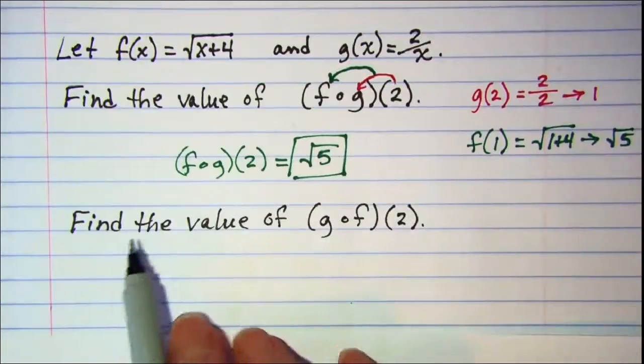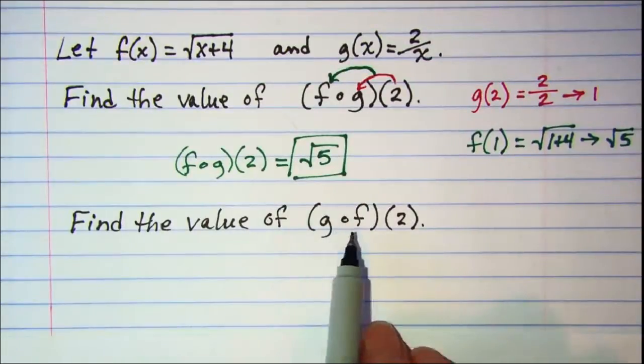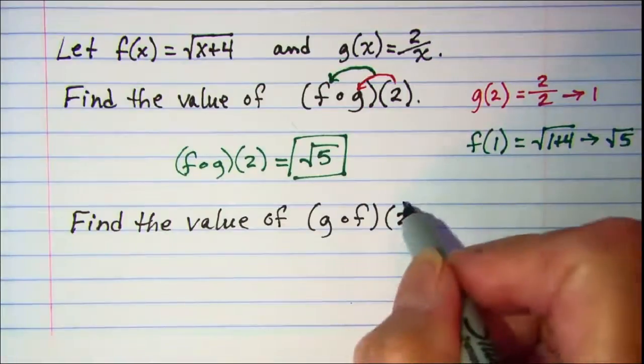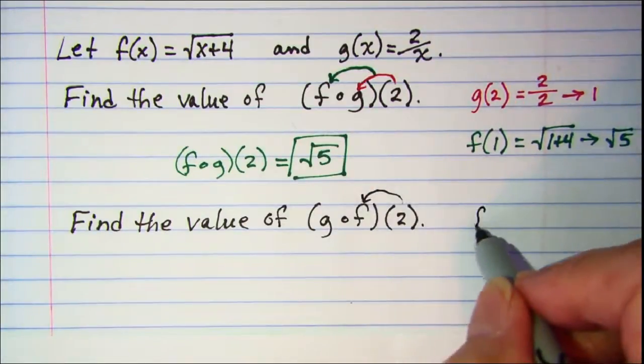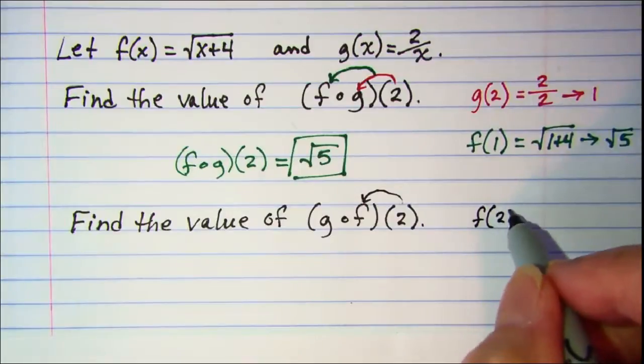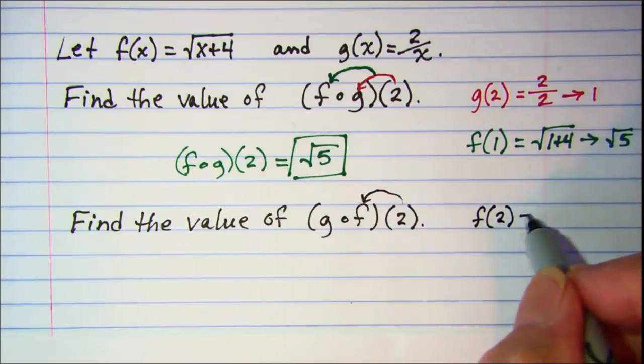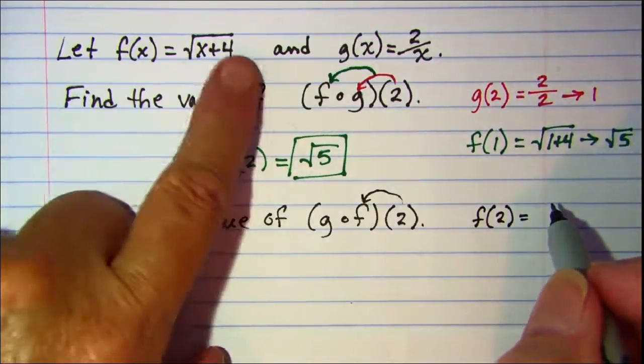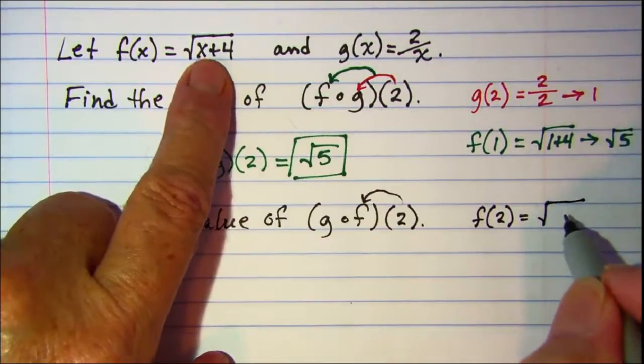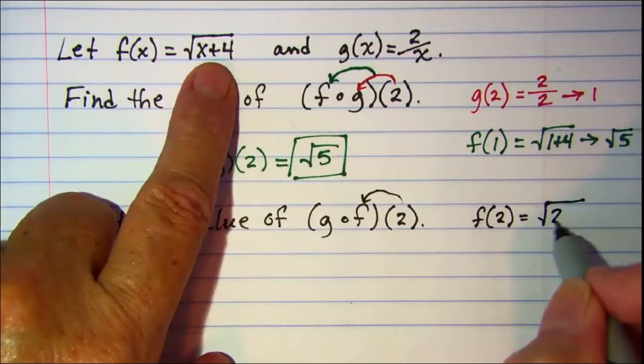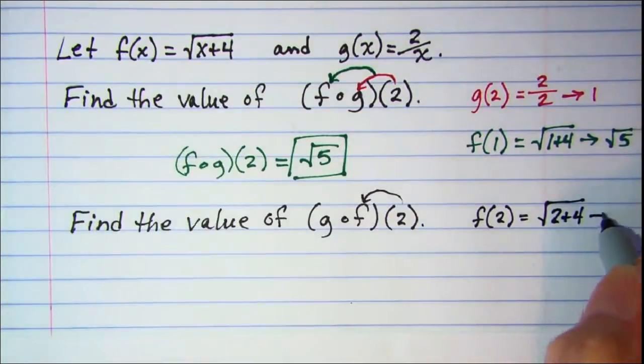So let's find the value of g∘f(2). So this time we want to put 2 into our f function. We'll do that by just evaluating f(2). My f is square root of x plus 4, so I'll put 2 in there. So this is √6.